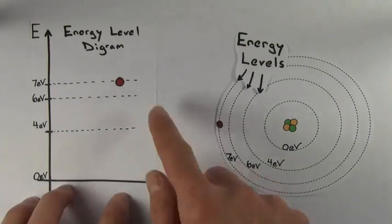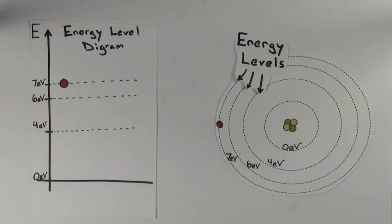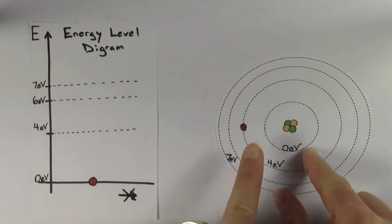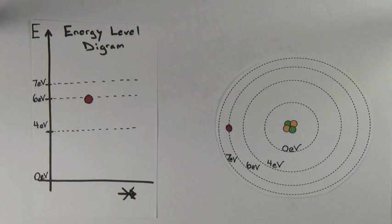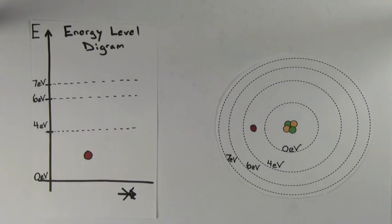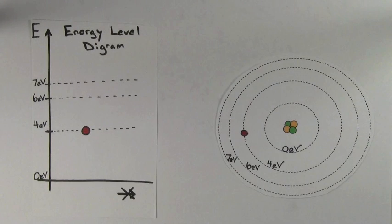Note that moving left or right on an energy level diagram doesn't actually represent anything meaningful, so technically there is no x-axis on an energy level diagram, but we draw it there anyway because it makes it look nice. All that matters is what energy level or rung on the ladder the electron is at. The electron for our hypothetical atom can only exist with 0 eV, 4, 6, or 7 eV — the electron just cannot exist between energy levels. It's always got to be right on one of the energy levels.